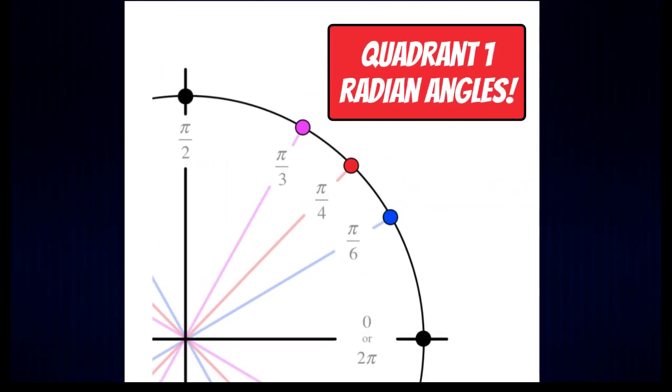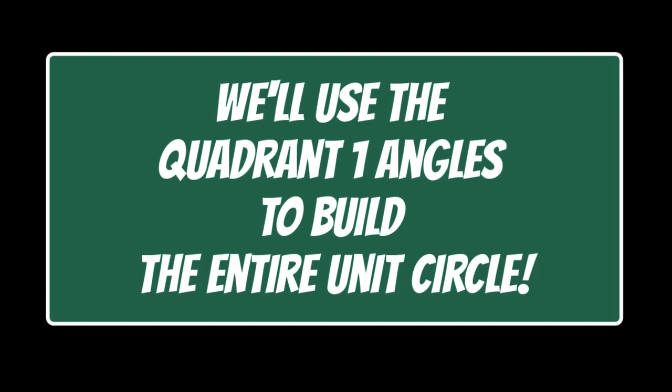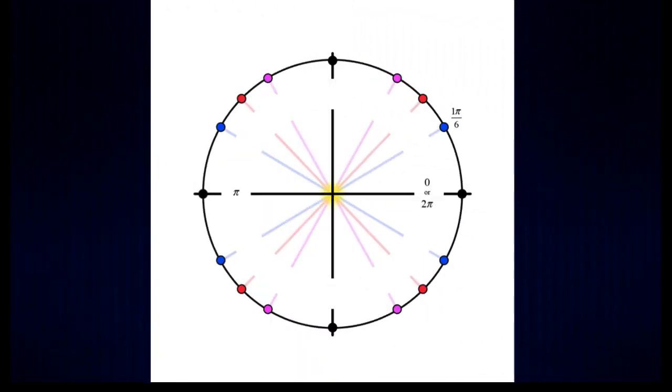In the last video, we discovered how to find the quadrant one radian angles, and we're going to use those angles to get all the other angles in the unit circle. So here we have a diagram that shows zero or two pi, pi, and our first angle in quadrant one, which is one pi over six.